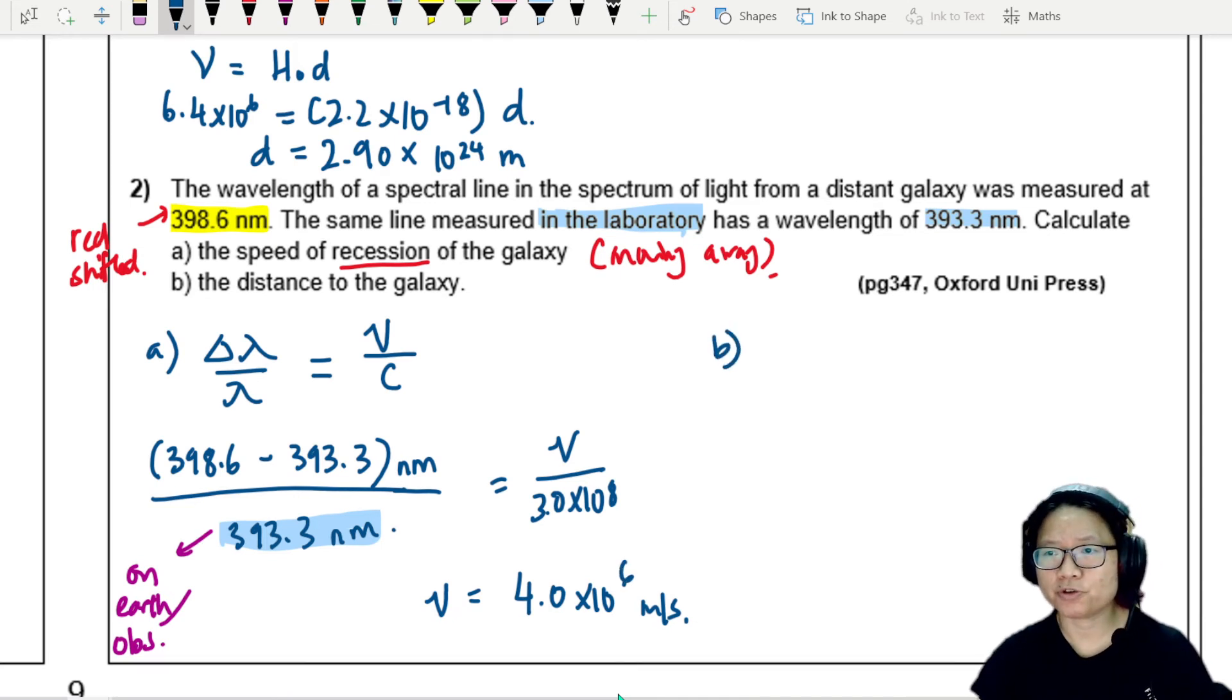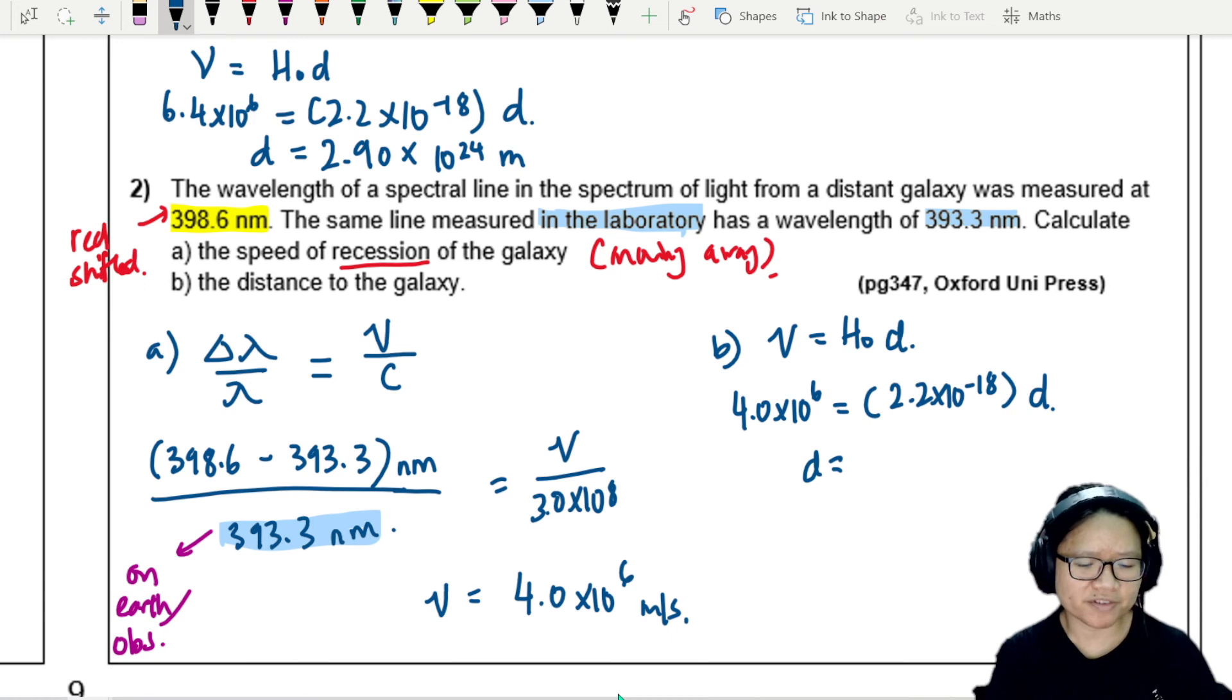For part B, we're going to use Hubble's law. Recession velocity equals H naught times the distance. 4.0 times 10 to the power of 6. We're going to steal the H naught from the previous question, 2.2 times 10 to the power negative 18. Making sure everybody here is comfortable in standard form. So now D is 1.8 times 10 to the power of 24 meters.